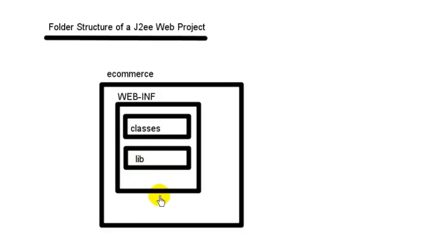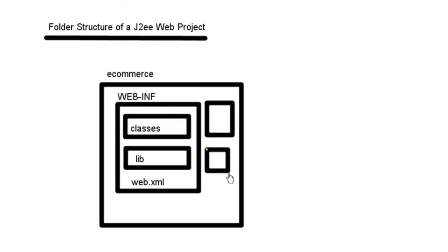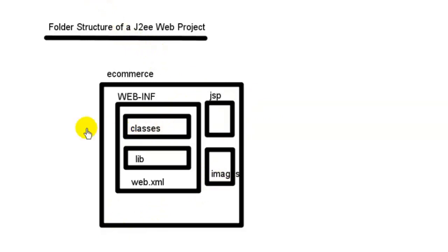Inside the WEB-INF folder we also have an XML file called web.xml — this is called the deployment descriptor. We also have two additional optional folders directly inside the e-commerce folder: one is a JSP folder and one is an images folder.